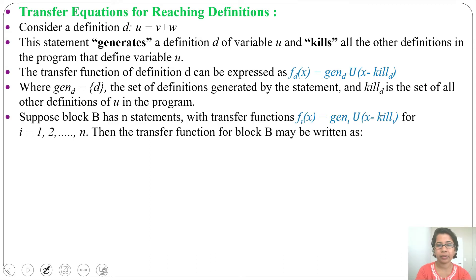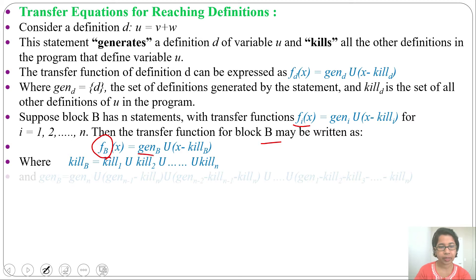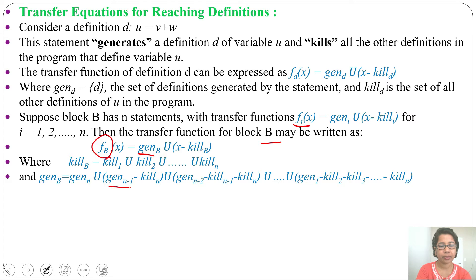Suppose block B has N statements with transfer function FI(X) = GEN(I) ∪ X − KILL(I), where I can be 1, 2, 3, up to N. These are for single definitions. For a block, the transfer function is: F(B)(X) = GEN(B) ∪ X − KILL(B). GEN(B) = GEN(N) ∪ (GEN(N-1) − KILL(N)) ∪ ... and KILL(B) = KILL(1) ∪ KILL(2) ∪ ... ∪ KILL(N).